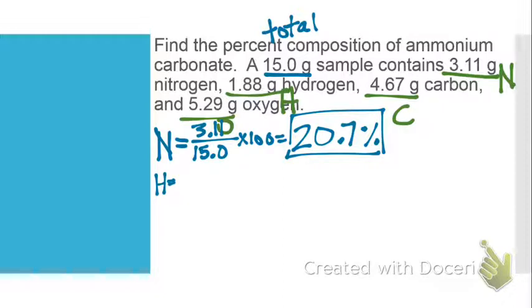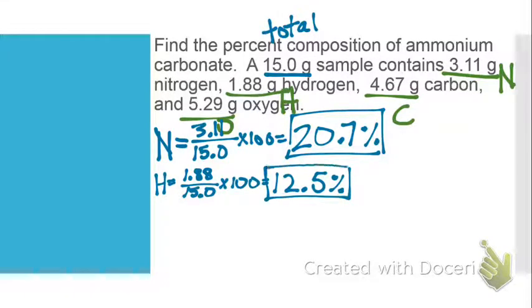Now I need to do the same thing for each of my other elements. Hydrogen had 1.88, I still have that same total mass for our total sample, times 100 is going to get us a percent composition of 12.5%. You'll notice on each of these that I rounded to three significant figures because over in my problem, each of these numbers had three significant figures.